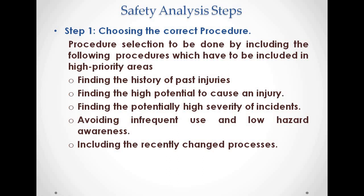The first step is choosing the correct procedure. Procedure selection is to be done by including the following high priority areas: finding the history of past injuries, finding the high potential to cause an injury, finding the potentially high severity of incidents, and avoiding infrequent use and low hazard awareness, including recently changed processes.